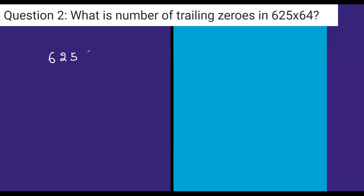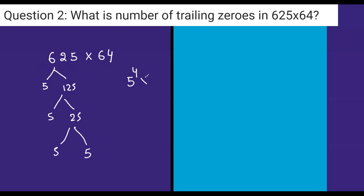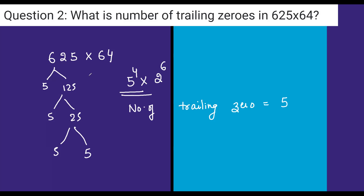Next question: 625 times 64. So 625 is 5 to the power 4, and 64 is 2 to the power 6. Which power is less? 4 is less. So the number of trailing zeros will be 4. Generally, 5 will be less, so the number of trailing zeros is 4, because 5 to the power 4.